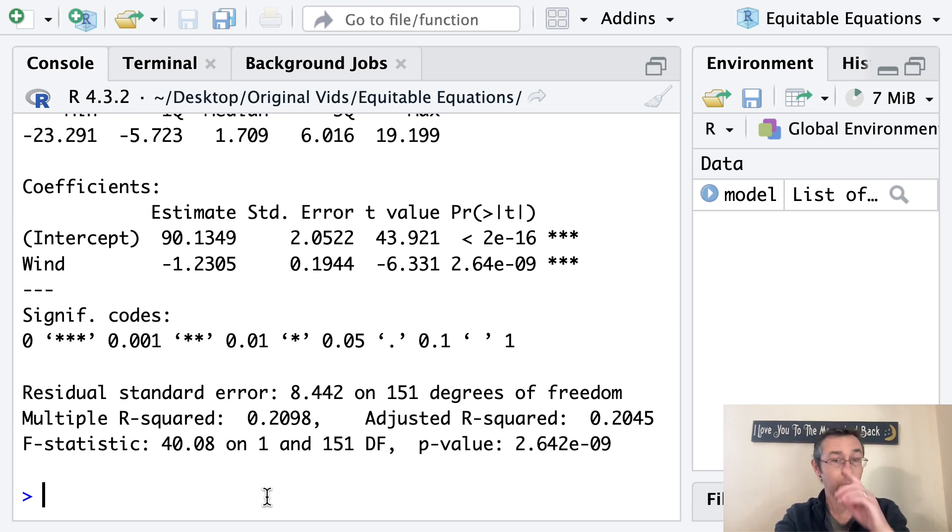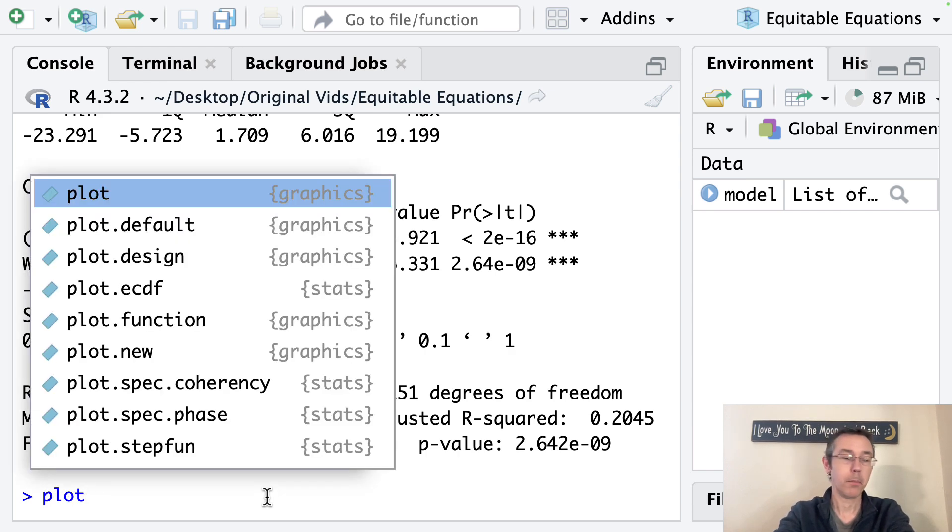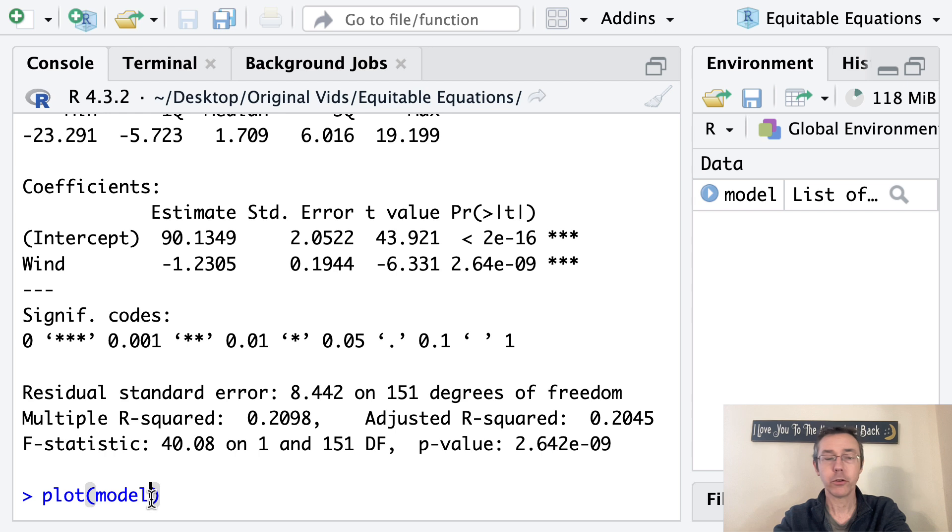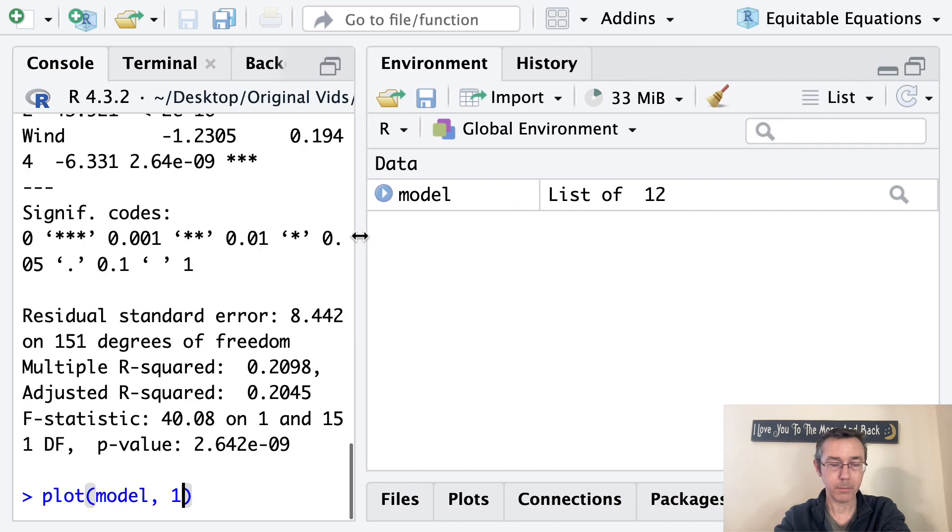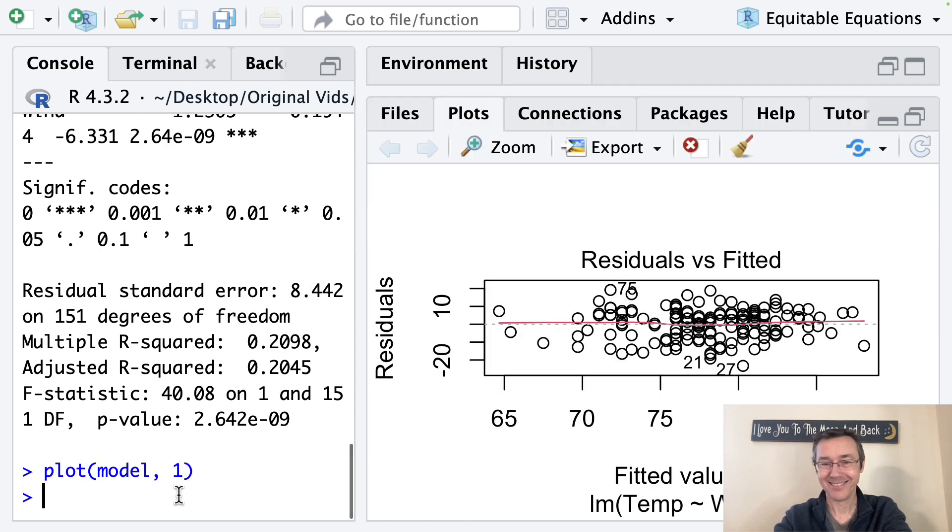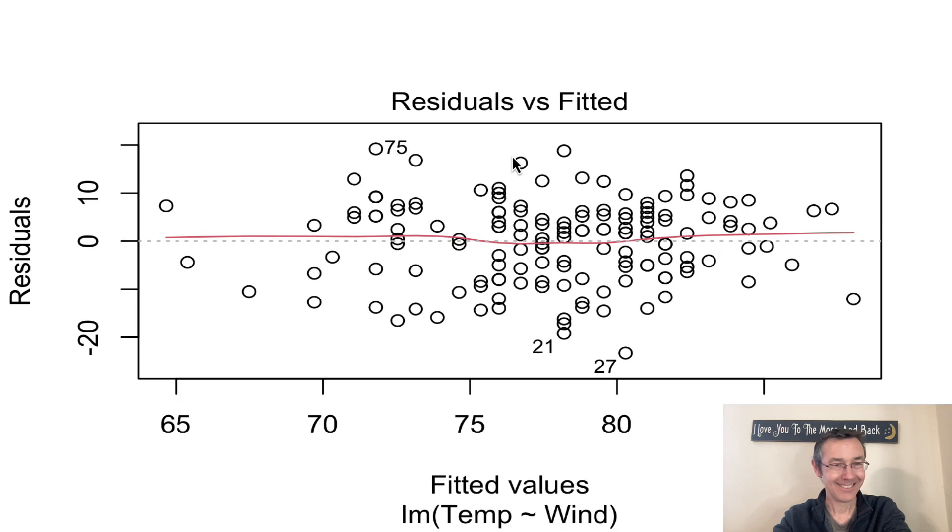The final thing that I want to show is just a rough-and-ready way of getting a residual plot. And we can do that here with plot, parenthesis, model. So remember, model is this thing I just built from that linear model command. Now, if I just hit return right now, I'll get a sequence of four diagnostic plots. I don't need all of that at this level. So I'm just going to get the first one with comma 1. I'm going to resize my window a little bit. This is going to open up in the lower right. I want to make sure that I have enough room for it actually to be shown. There we go. And return. There we go. I'll zoom in on that.